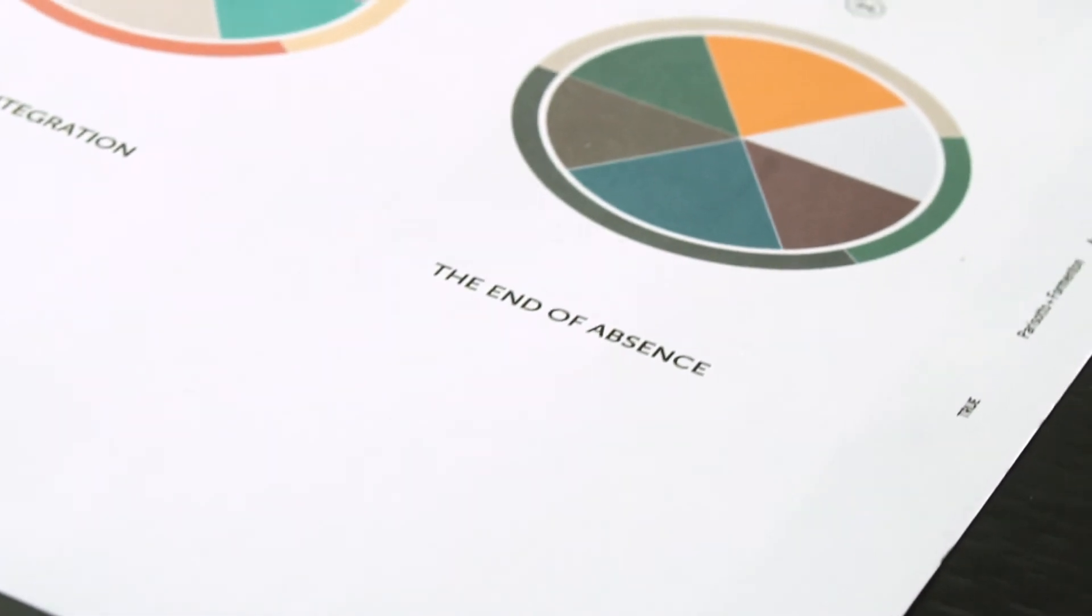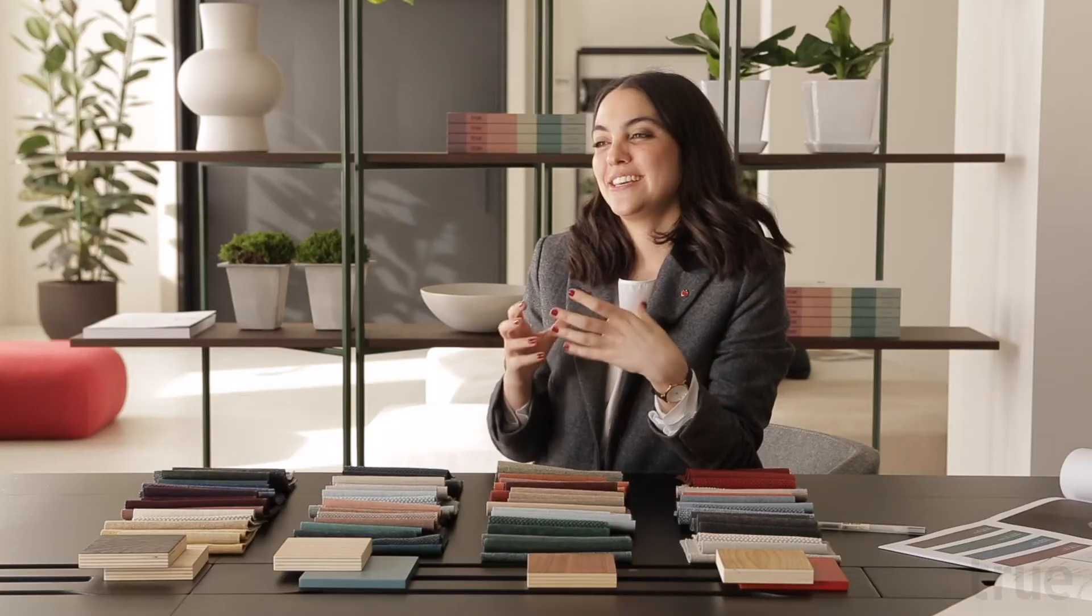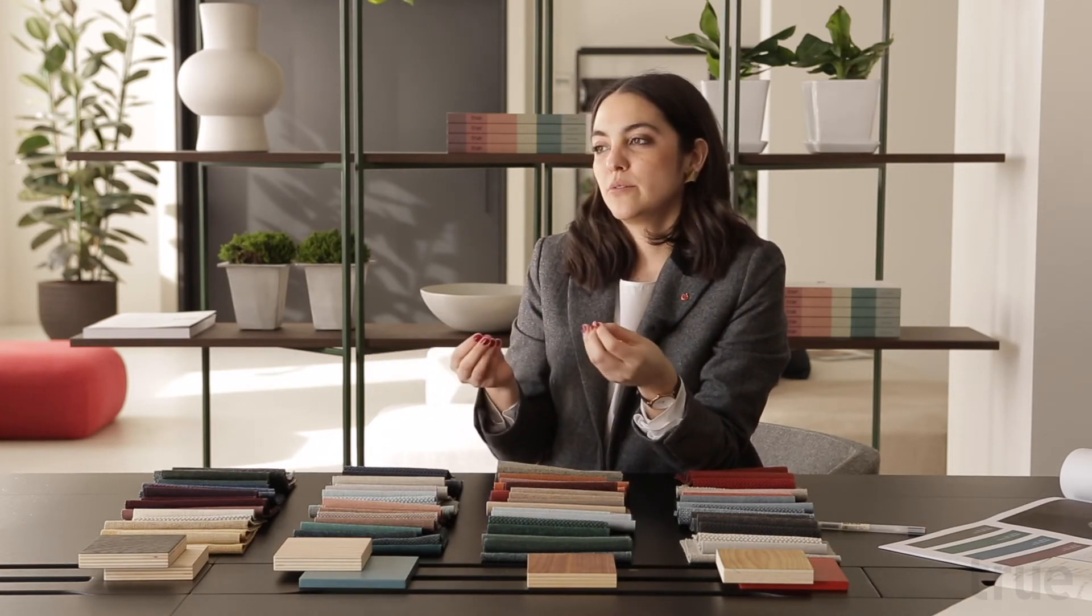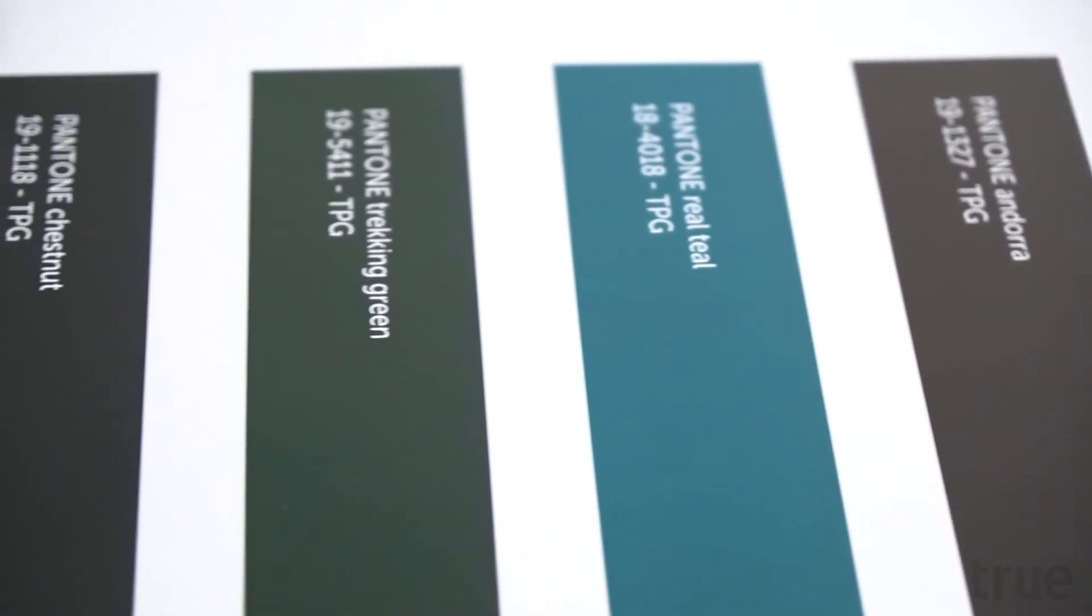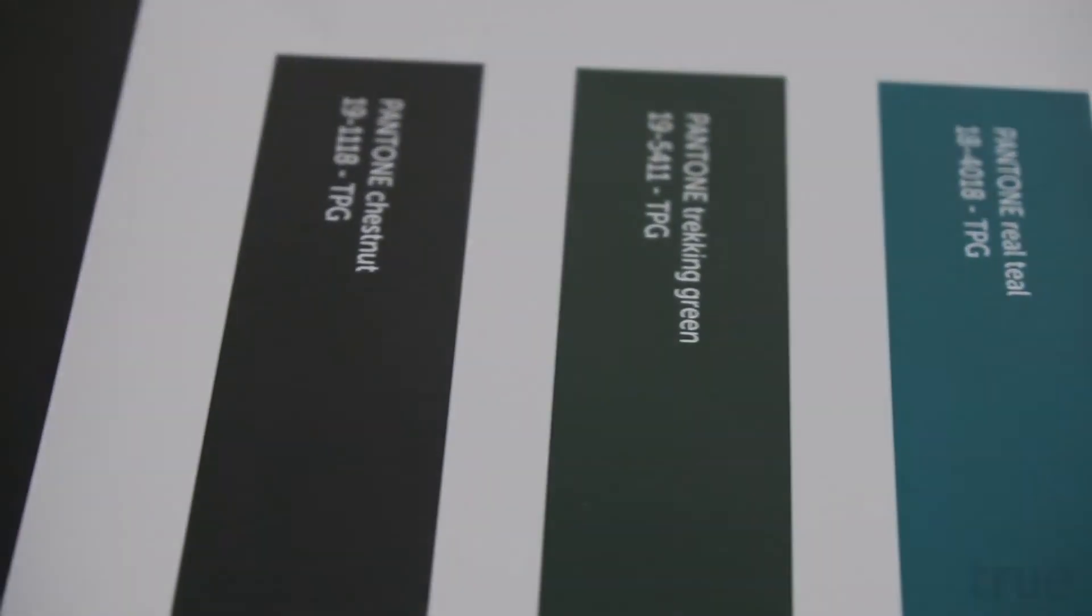The fourth trend is The End of Absence. It talks about the essentiality of the objects. It is what it is. So it's how can we increase the functionality of the objects respecting the pure geometry and how can we enhance this volume with the colors. That's why this color palette is stronger.